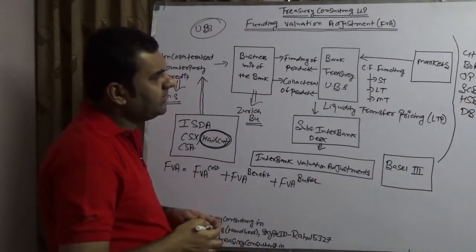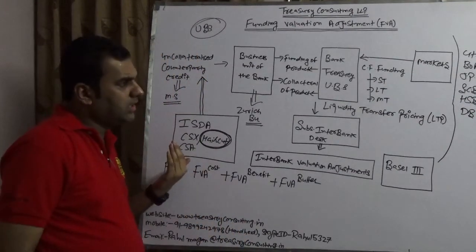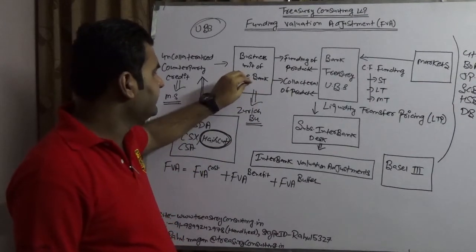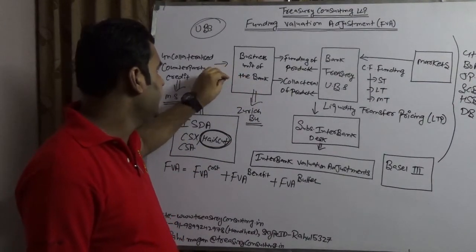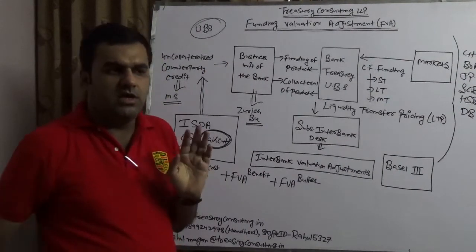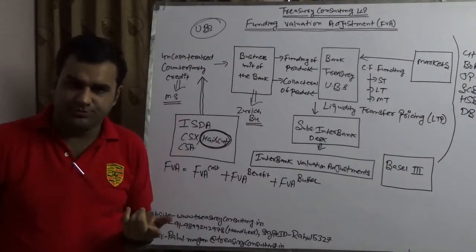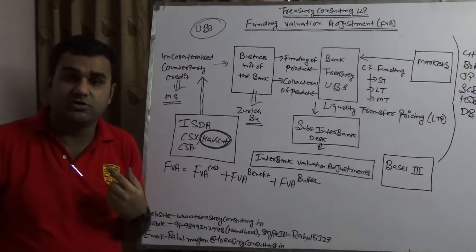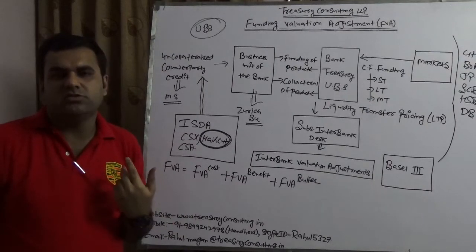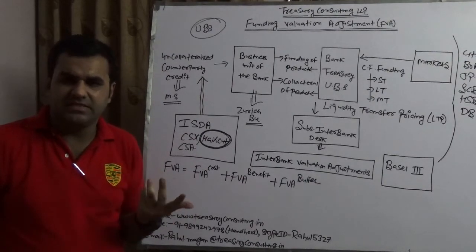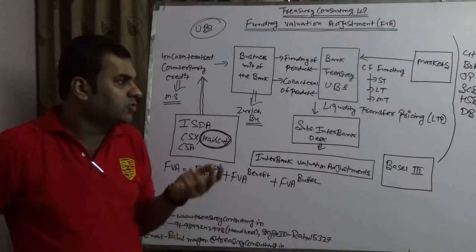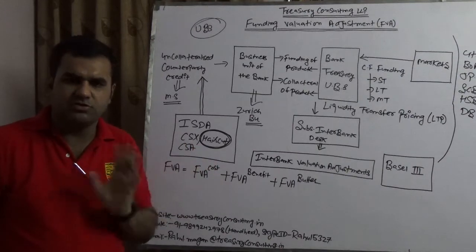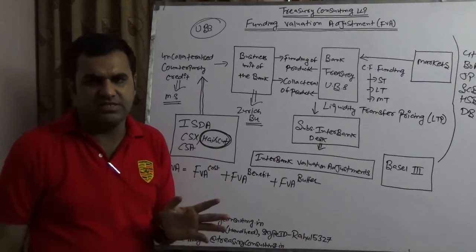These interbank markets provide funding to this bank, which in turn gives it to the business unit. The business unit takes this funding into consideration because they are dealing with an uncollateralized derivative — or it could be a loan as well. Generally loans are never uncollateralized, but there are certain instances when we have seen that also. Predominantly, big companies trade large amounts of derivatives, and the majority of them are uncollateralized.